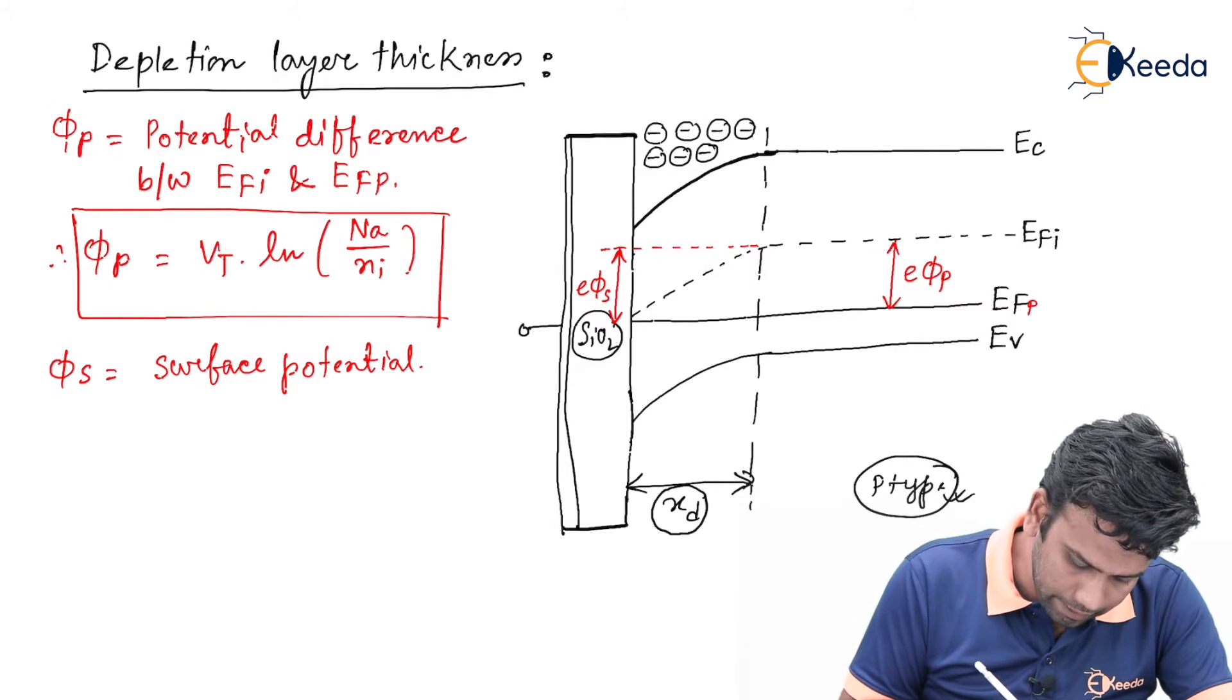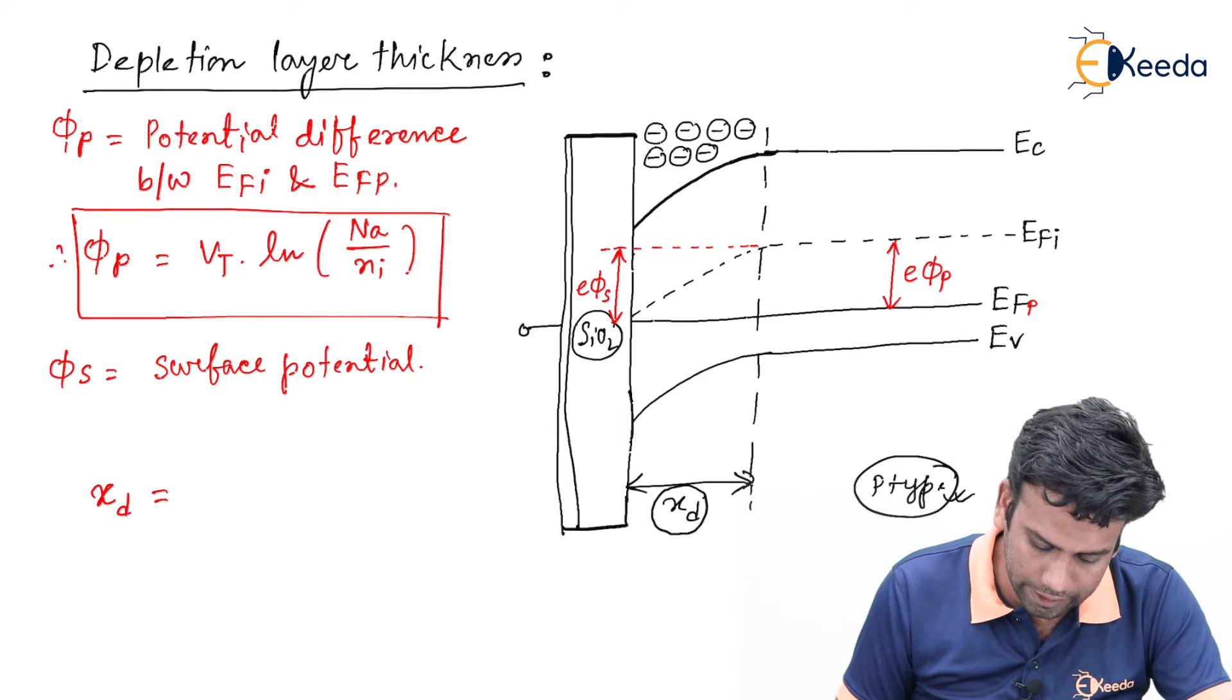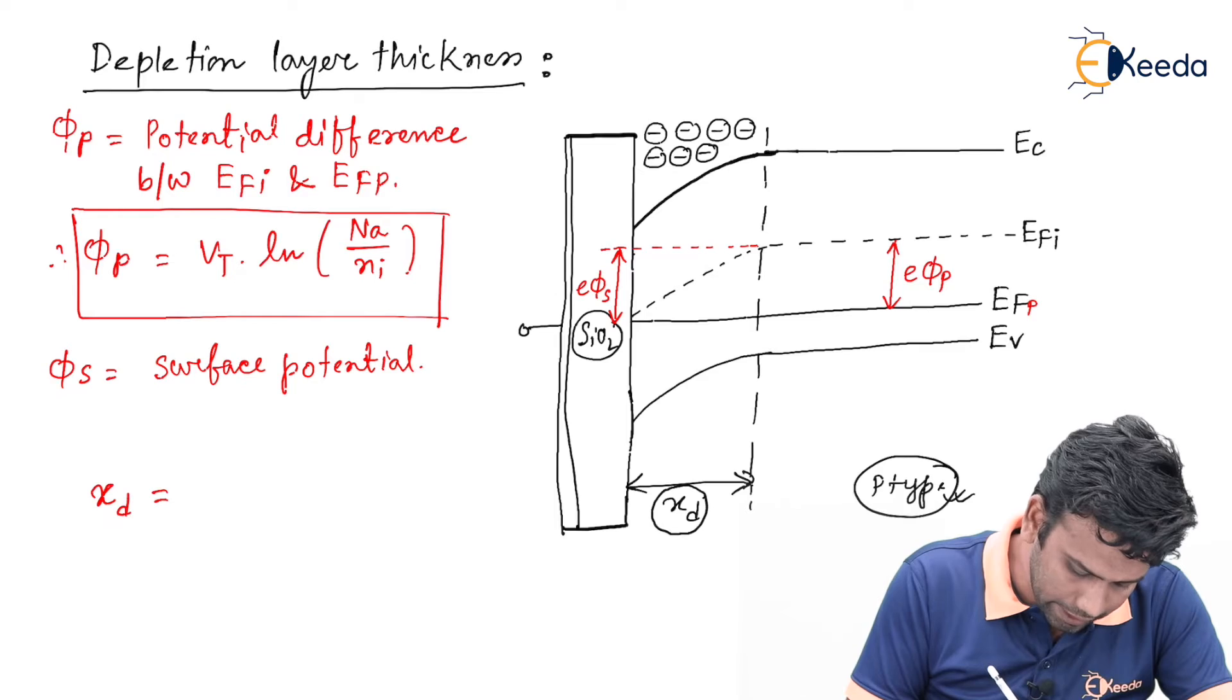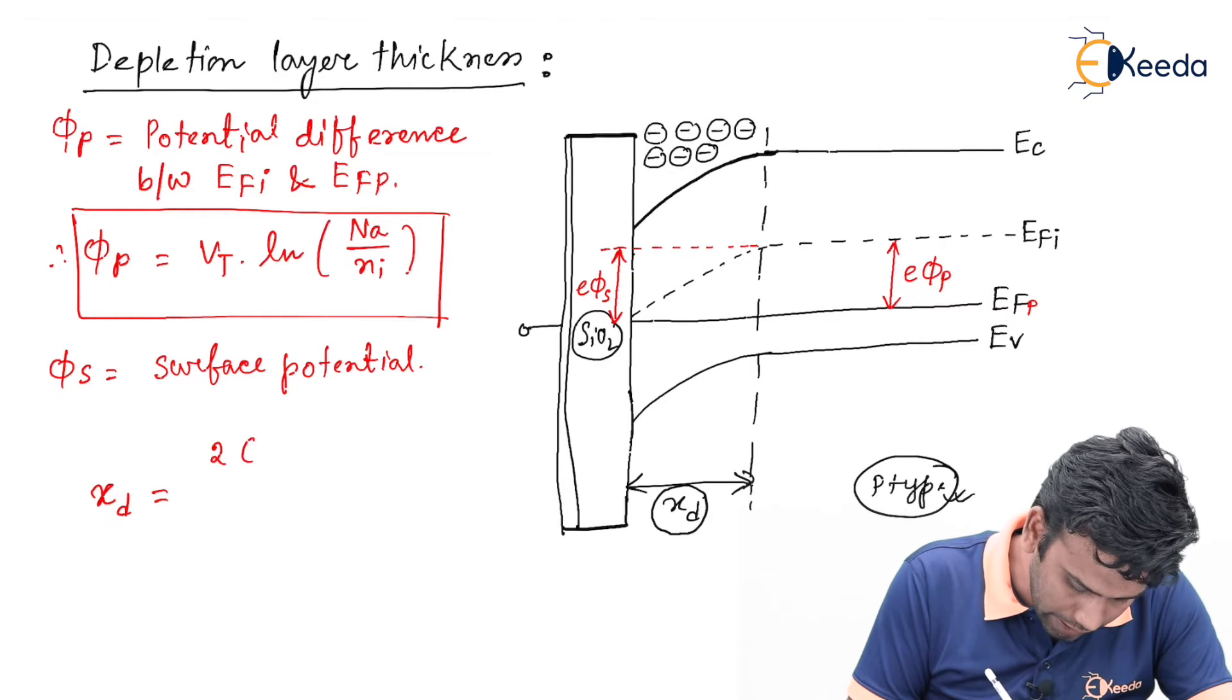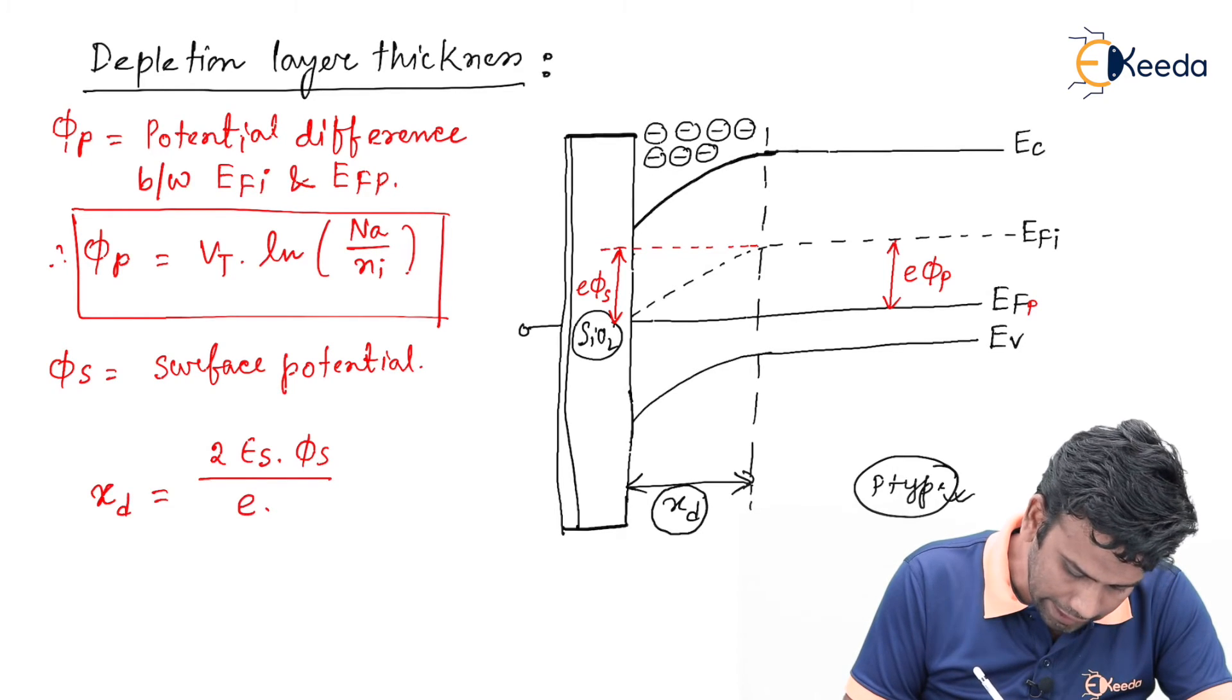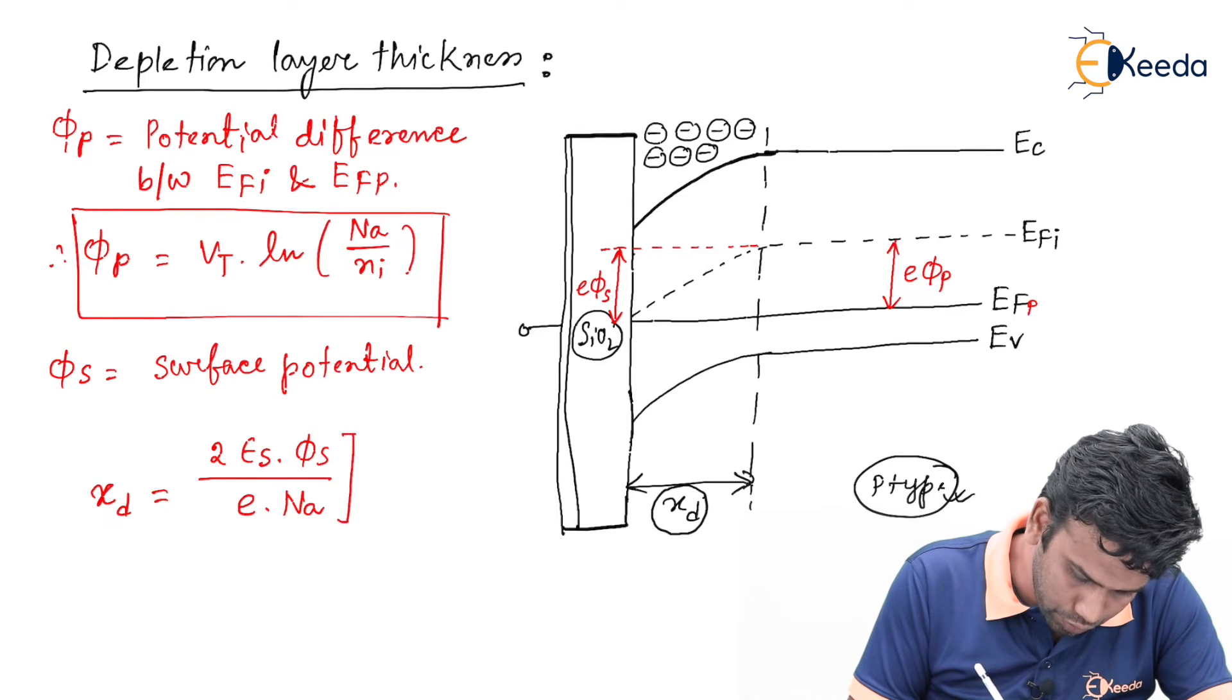We can write the equation of Xd, that is the depletion layer thickness, in terms of phi S, and that will be square root of 2 epsilon S into phi S divided by electronic charge E into Na.